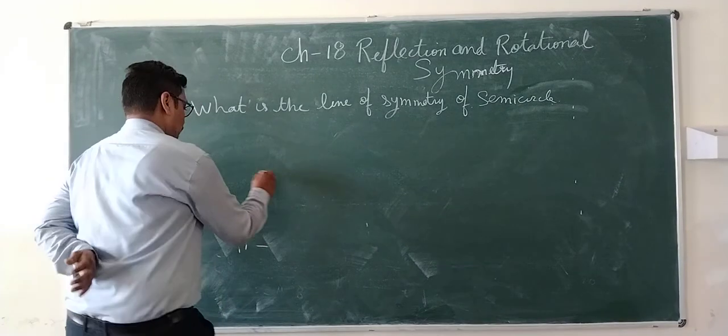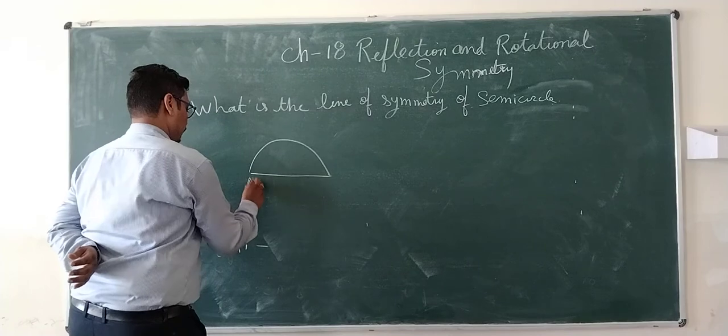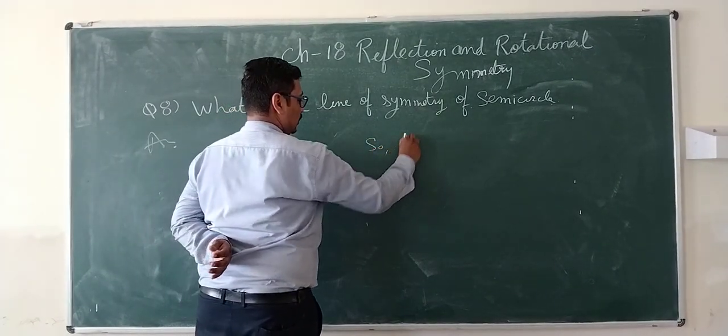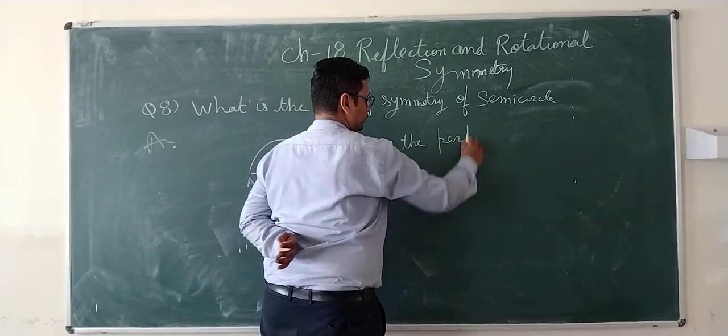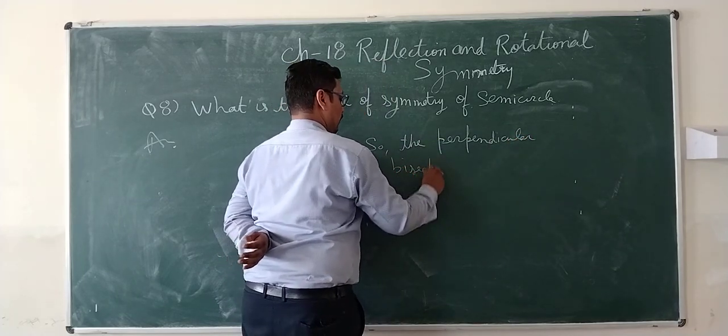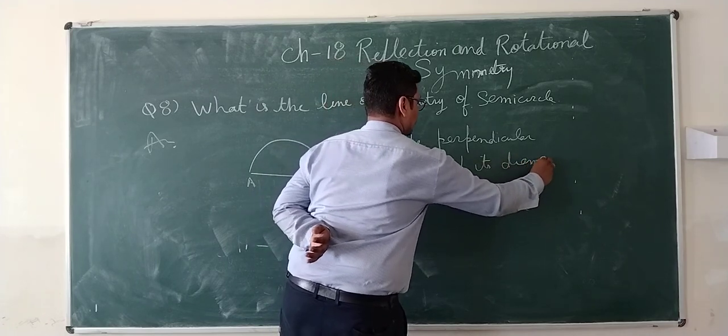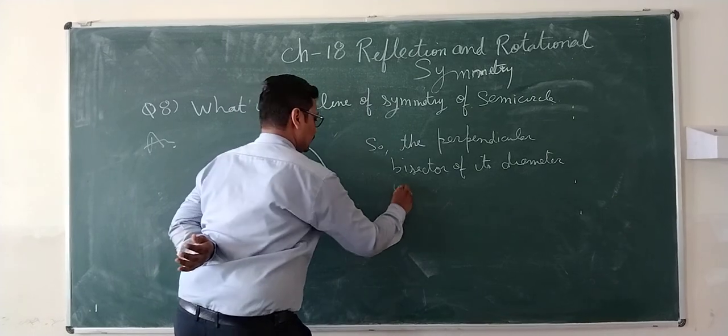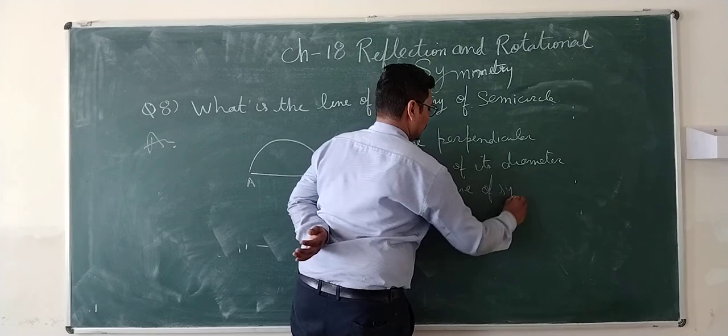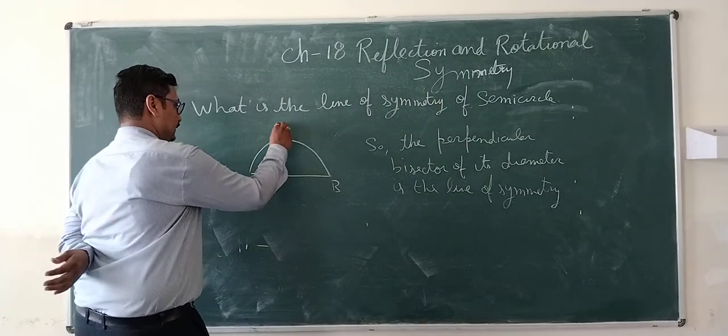Suppose we are having a semicircle, this one. So the perpendicular bisector of its diameter is the line of symmetry. So its line of symmetry is this one.